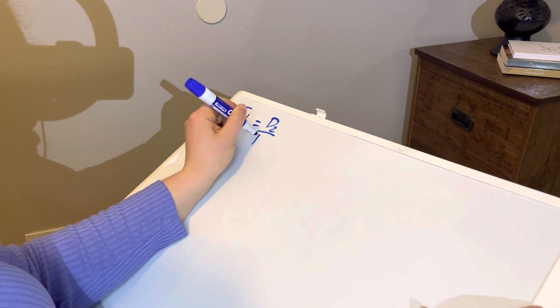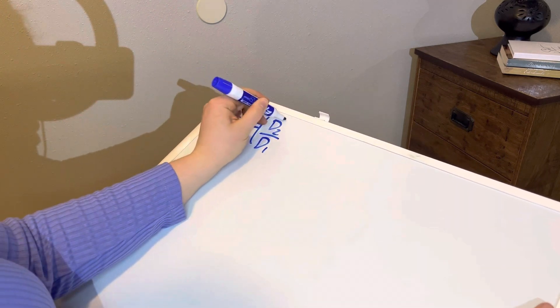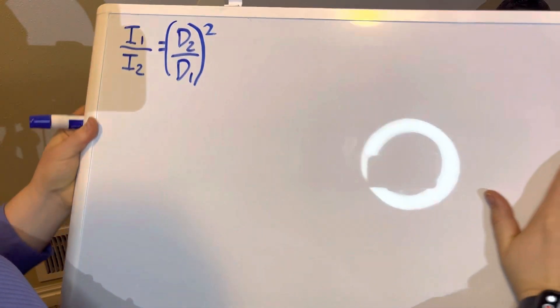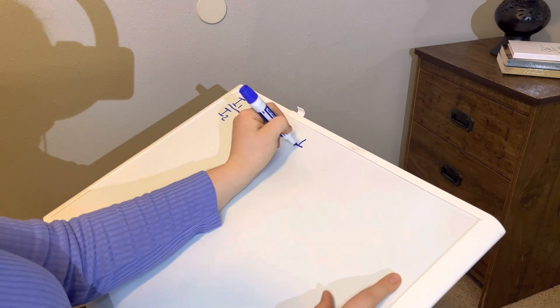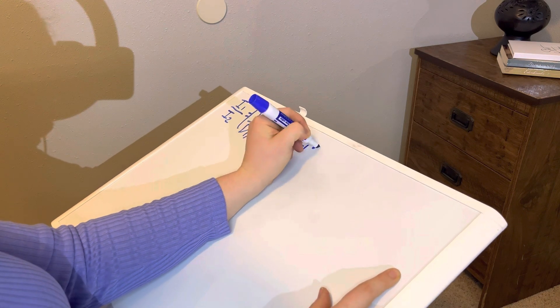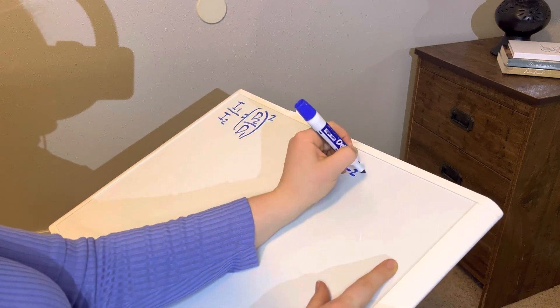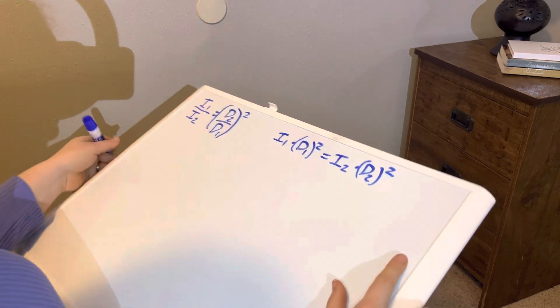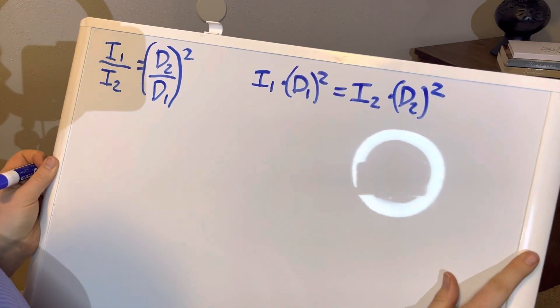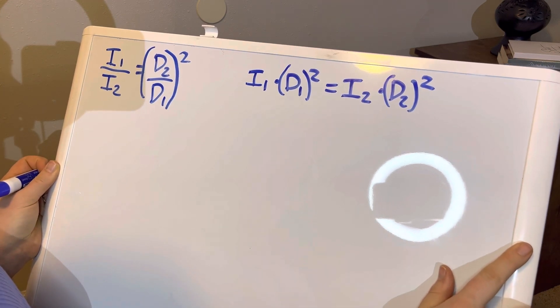As you increase the distance you are from that source, you're going to decrease your dose. But the trick is these are not proportional. If you increase your distance by a unit of two, you're not going to decrease your dose by a unit of two. The inverse square law states your initial intensity divided by your end intensity equals your end distance divided by your initial distance — both squared. You could also see this written as your initial intensity times your initial distance squared equals your end intensity times your end distance squared. Both formulas give you the same output, just written a different way, and you can use whichever one you think is easiest.